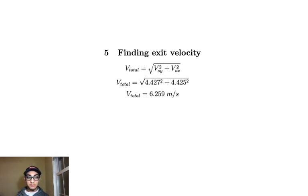And now, using Pythagorean's theorem, I'm going to find the total exit velocity of the ring as it leaves the robot. So I'm going to do my initial velocities in the x and y direction squared and add them together and take the square root. And this is going to be that hypotenuse vector that I showed you earlier. And that is 6.259 meters per second.